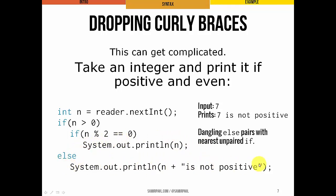Else, we print 'n is not positive.' Suppose we run this and input the number seven. The output we get back is 'seven is not positive,' which isn't what we expected. We'd think: seven is greater than zero, then check if n mod two is zero — it's not — so we wouldn't execute the print or the else. But the way this is indented is misleading. Because we didn't use curly braces, this else is dangling and ends up matched with the nearest unpaired if — the inner if — rather than the outer one. That's why we get this nonsensical answer.